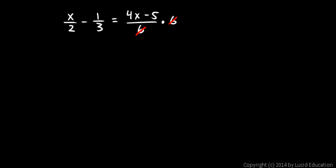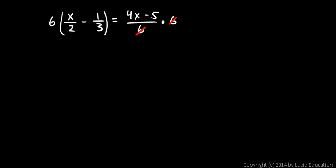Now if I've multiplied the right side by 6, I have to multiply the left side by 6. So I'm going to put a 6 over here, but think now — you have to have parentheses right there. Without the parentheses, this just looks like you're doing 6 times x over 2, and that's not right. This 6 is going to get distributed to the x over 2 term and to the negative 1 third term.